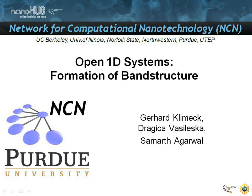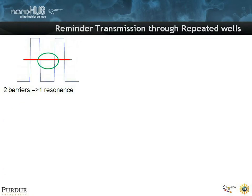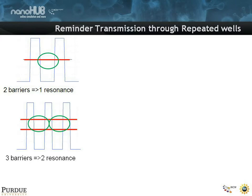The title of this segment is Open 1D Systems: Formation of Band Structure. We'll pick up from the previous presentation where we've seen that if you have two barriers, you have one resonance. If you have three barriers, you have two resonances that are split into bonding and antibonding state. And if you have n barriers, you have n-1 resonances.